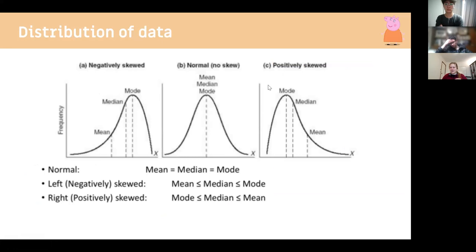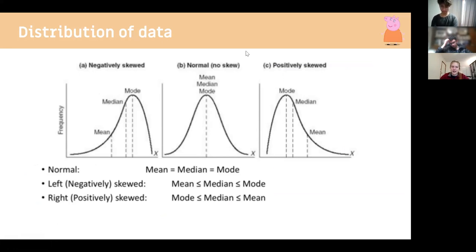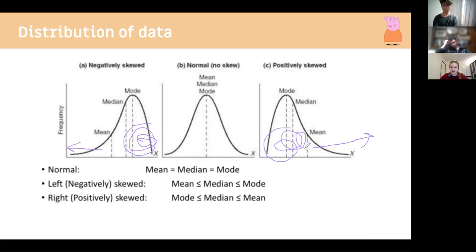Regarding data distribution: if normally distributed, the data is in the middle and the mean, median, and mode are the same. If negatively skewed, the data trails off in the negative direction with more data concentrated at the higher end. If positively skewed, the data trails off in the positive direction with more data concentrated at the lower end.